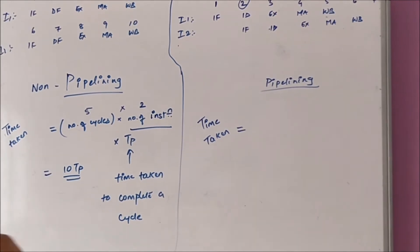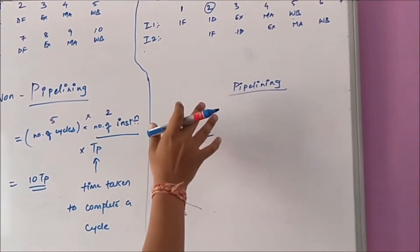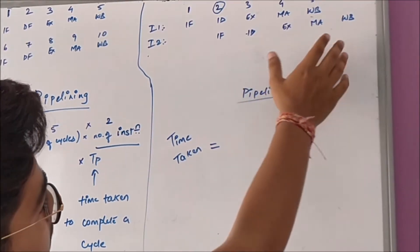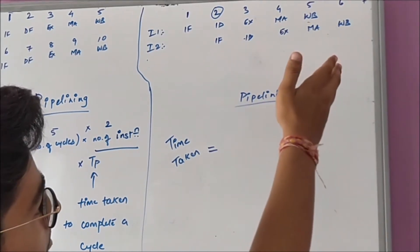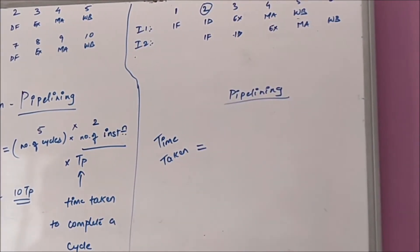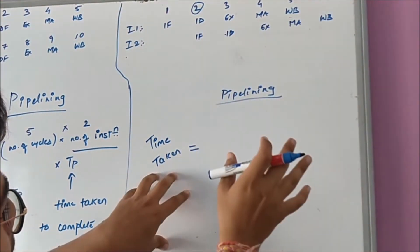Now if we talk about pipelining architecture, we can see here that it completes in a lesser time than the non-pipelining architecture, just by saying that it completes in a less number of cycles. We assume that each phase takes a single cycle.